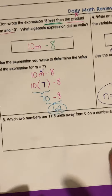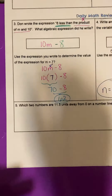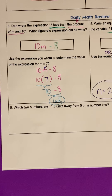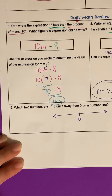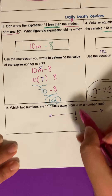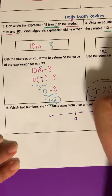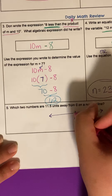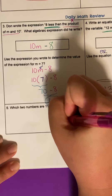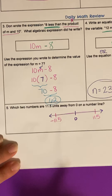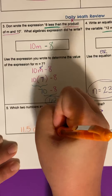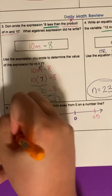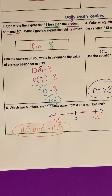Number five: which two numbers are 11.5 units away from zero on a number line? If you have a number line with zero, and you go 11.5 units, there are two directions. You can go in the positive direction and reach positive 11.5, or go in the negative direction and reach negative 11.5. So the two numbers are 11.5 and negative 11.5. We made it through our fluency and DMR.